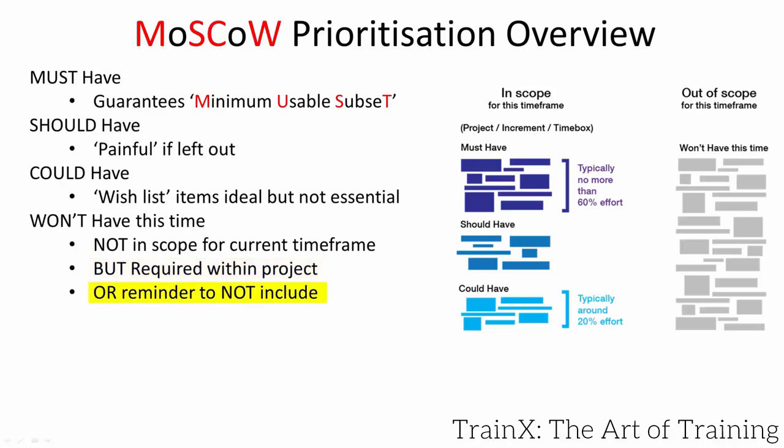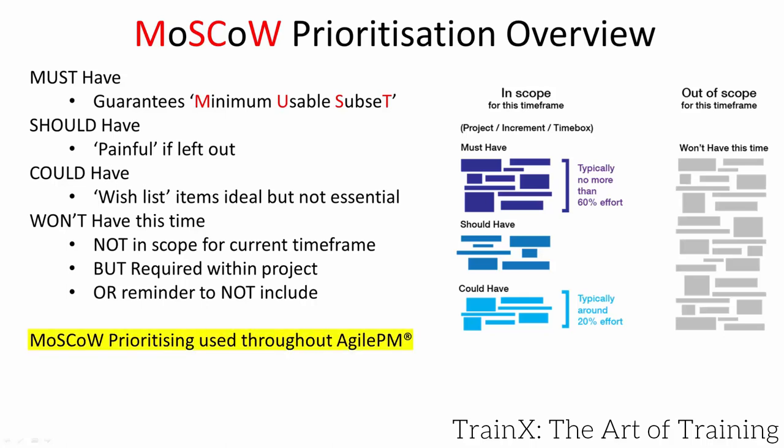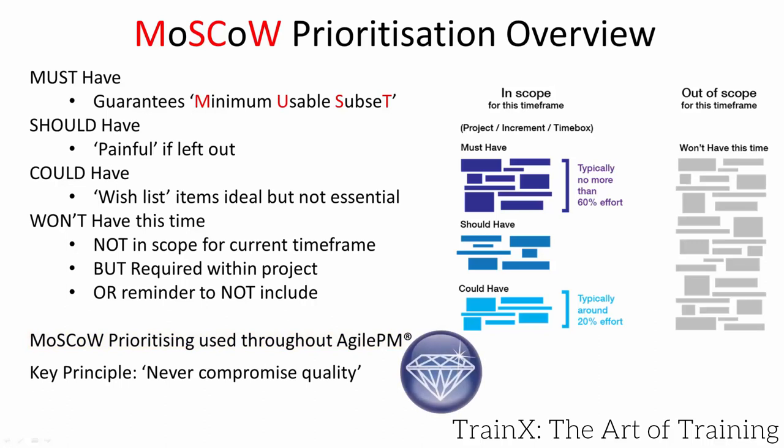MoSCoW priorities have timeframes. For example, our case study's automatic backup could be a could for the in-house version — if not delivered, the IT administrator will manually back up the data. For the commercial version, automatic backup becomes a must, as no one would buy it if their data could just go missing. MoSCoW helps with testing, and so the principle never compromise quality is at play here.